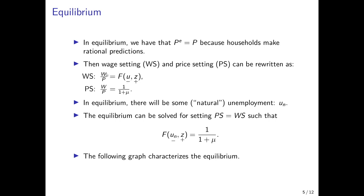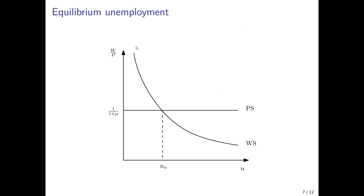The equilibrium of the labor market is where the two curves — the price-setting equation and the wage-setting equation — intersect. This gives the equilibrium unemployment rate UN, made up of structural and frictional unemployment that is not due to business cycle effects, but is simply the equilibrium rate for the given prices and wages.